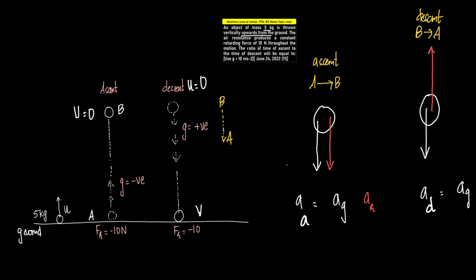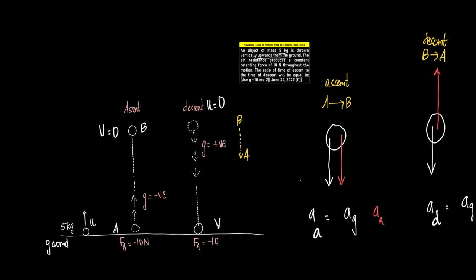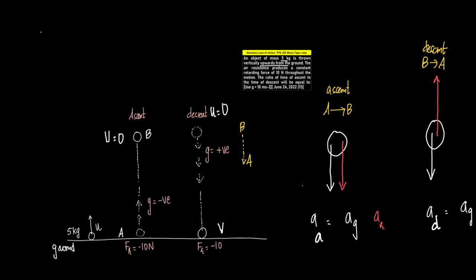Now let us see what the two diagrams represent. There are two different accelerations acting on the body: one is due to acceleration due to gravity (AG), and the other is the acceleration produced by the air resistance. To understand this better, we'll use the concept of the free body diagram.